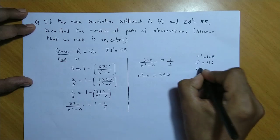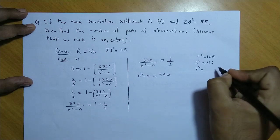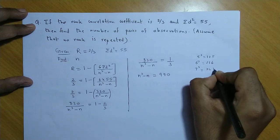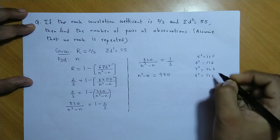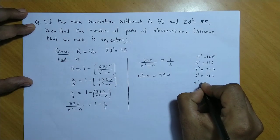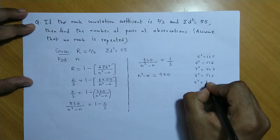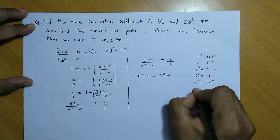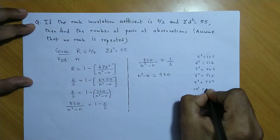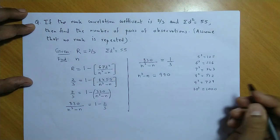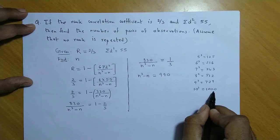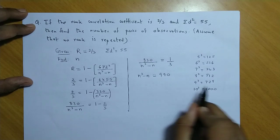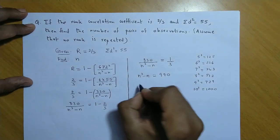7 cube value is 343, 8 cube is 512, 9 cube is 729, 10 cube is 1000. So, the value closest to 990 is 1000. And 1000 minus 10 hota hai 990.